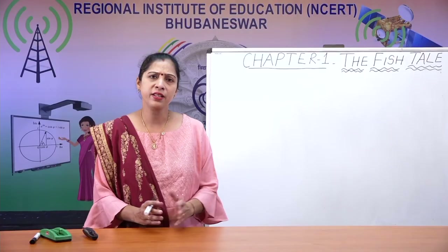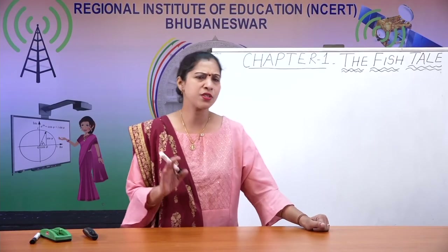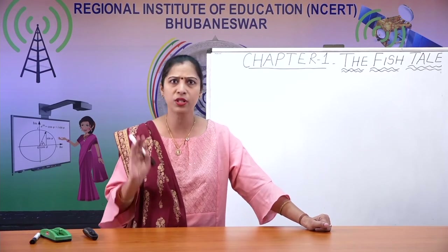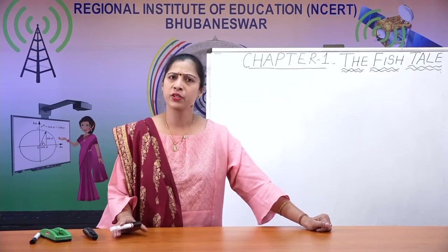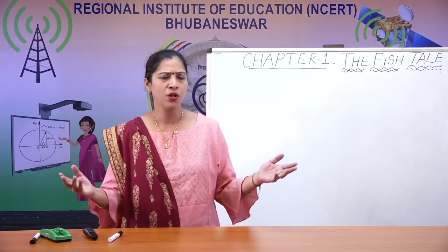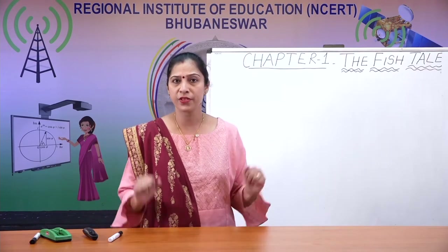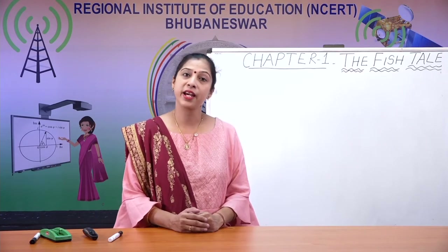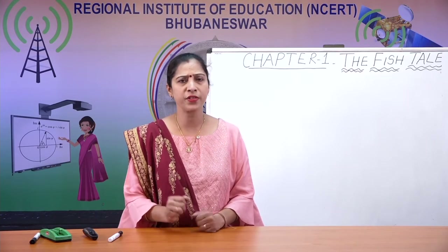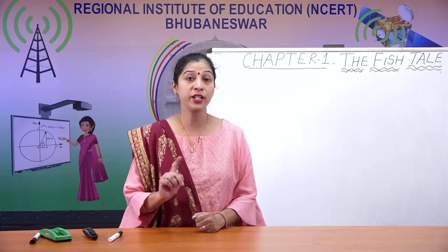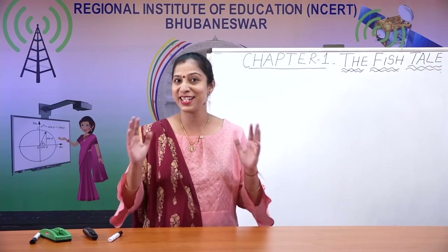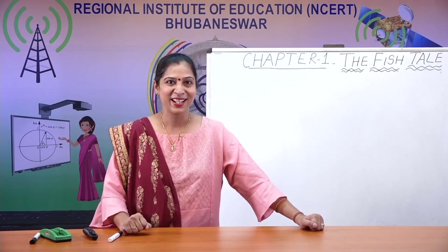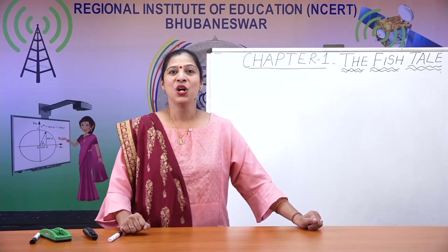Fish look very different from each other, just as humans look different from each other. Their tails also look different — and note it is the T-A-I-L tail, not the T-A-L-E tale. These are called homonyms. There are two different types of fish tails.